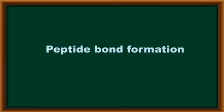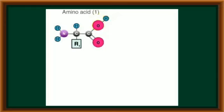So, during this translation process, the peptide bond formation is an important step. This peptide bond formation generally takes place with the help of one of the enzymes called peptidyl transferase enzyme. It is an RNA-based enzyme. This occurs during peptide bond formation between two amino acids.